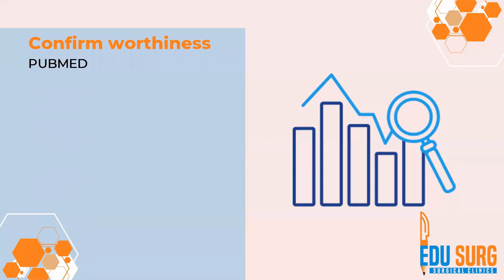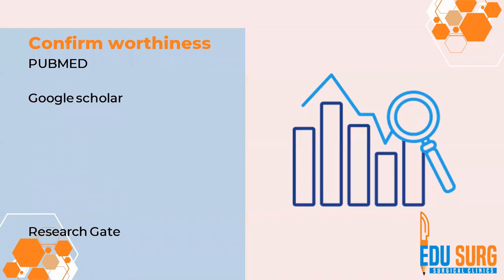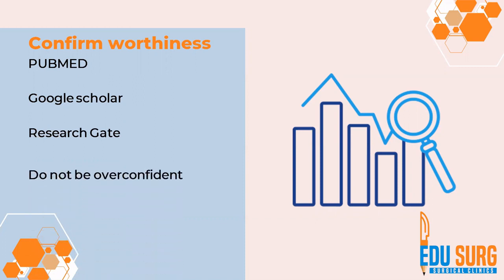To confirm worthiness, check on PubMed, Google Scholar, and ResearchGate. Look at already published articles and identify the value that you can add to the existing literature.